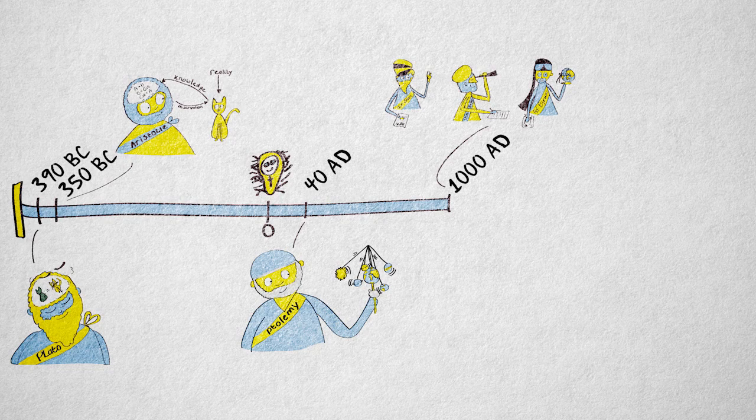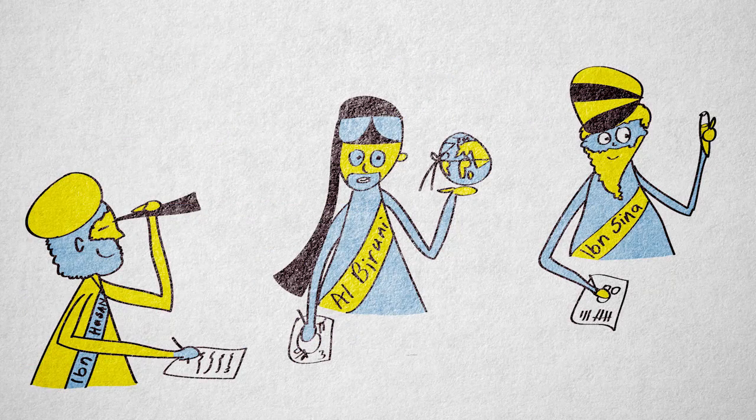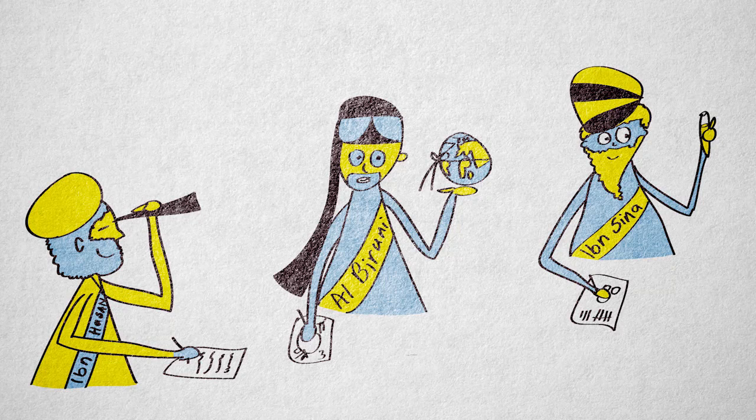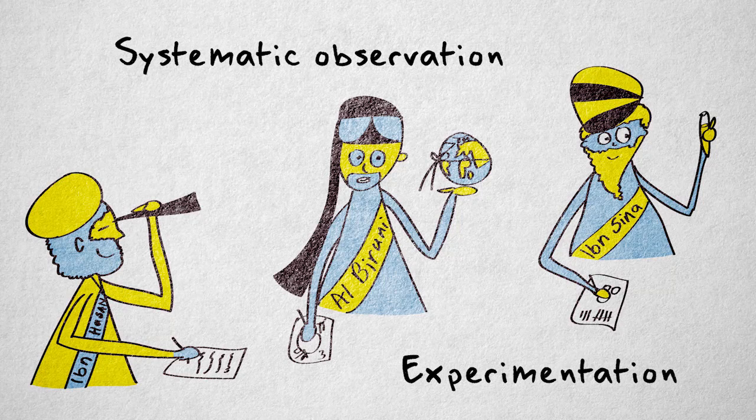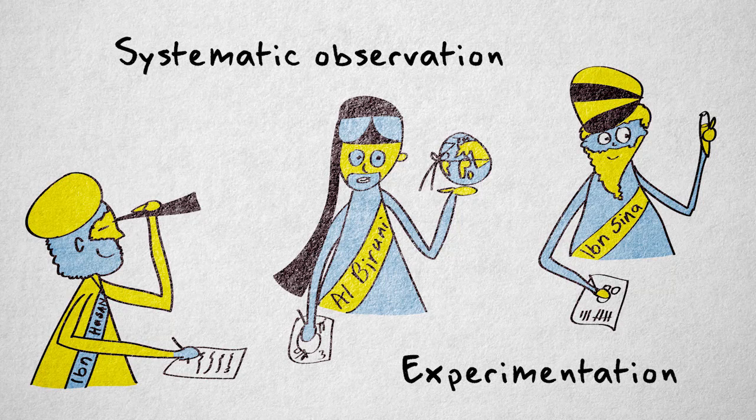First, around the turn of the 10th century, Arab and Persian scholars, such as Ibn al-Hassan, al-Biruni, and Ibn Sina, started using systematic observation and experimentation, emphasizing unbiased observation, and not just logical reasoning.